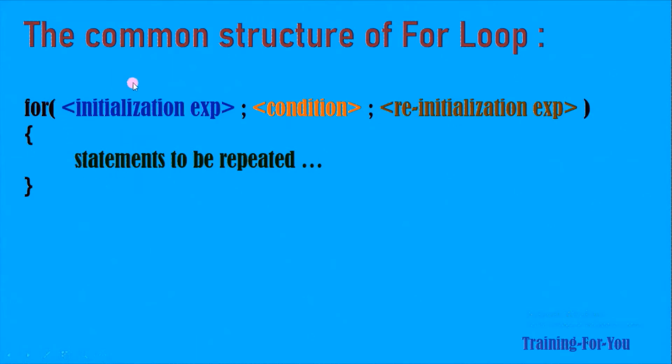So at first the initialization expression works only once, then the condition is checked. If the condition is true, the control enters into the loop body, executes it, and once the body is over it returns to the re-initialization expression. After re-initialization, again the condition is checked. This way the loop continues and the moment the condition becomes false, the control comes after the loop body.